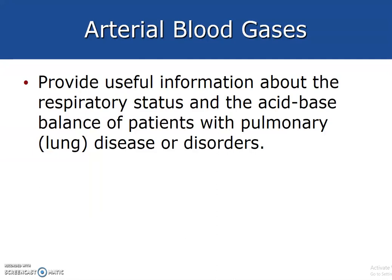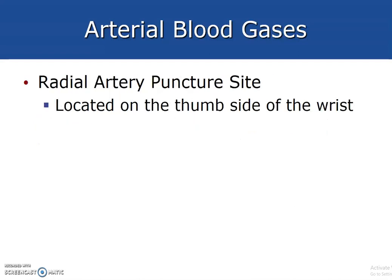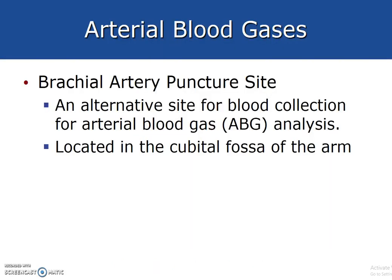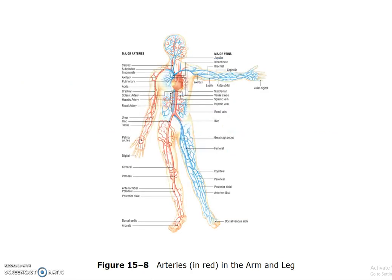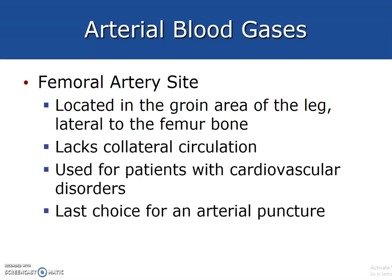Arterial blood gases (ABGs): phlebotomists do not perform these — respiratory therapists do — but we need to know the basic procedure and why we perform them. They provide useful information about the respiratory status and acid-base balance of patients with pulmonary disease or disorders. Arterial blood rather than venous blood is used. The radial artery puncture site is located on the thumb side of the wrist. The brachial artery puncture site is an alternative site located in the cubital fossa of the arm. The femoral artery, located in the groin area lateral to the femur bone, lacks collateral circulation and is the last choice for arterial puncture since it is so invasive.